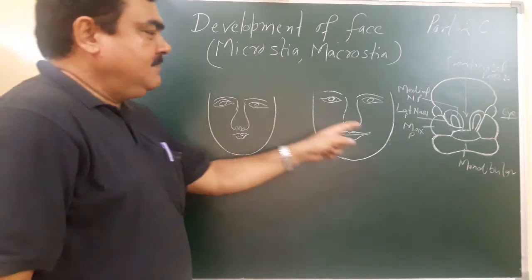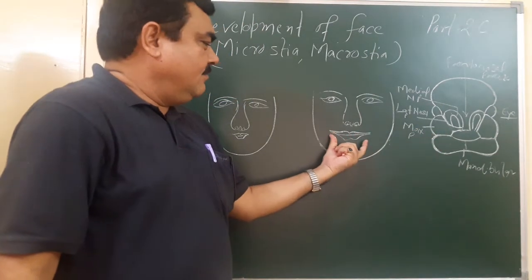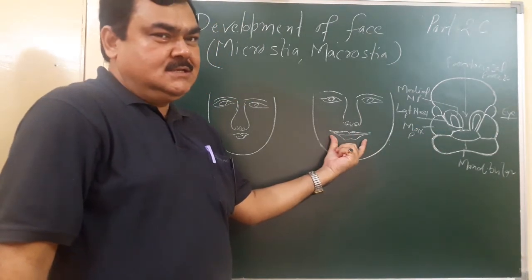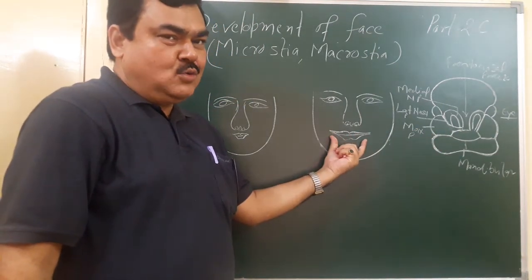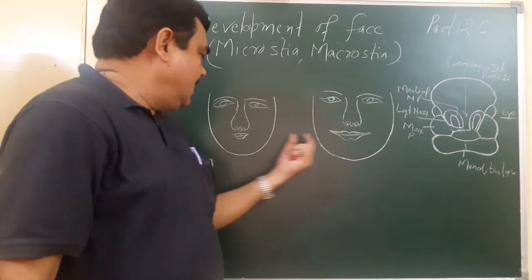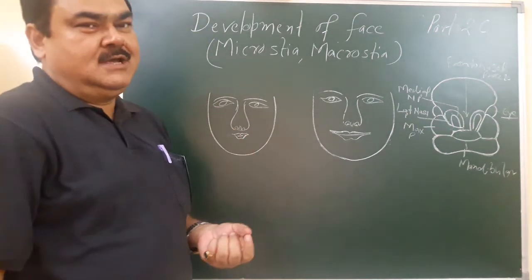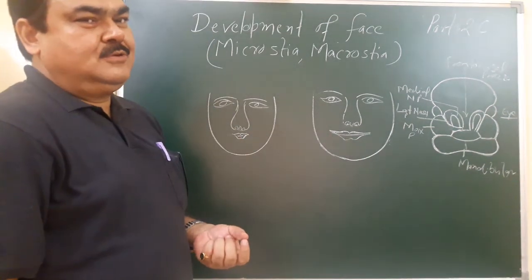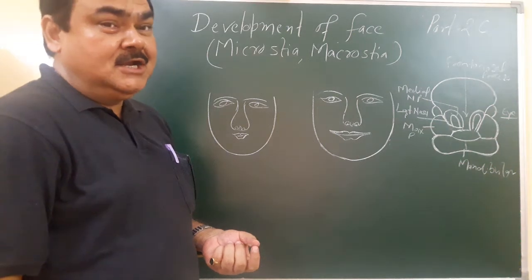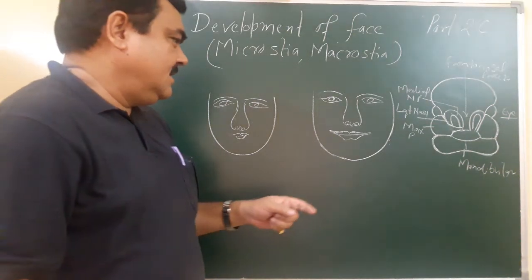If this fusion is less, then the mouth is large. This is macrostomia. So these are two developmental defects — microstomia and macrostomia.